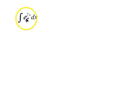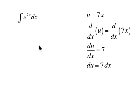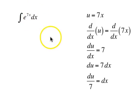We will let u be the exponent, so u is going to equal 7x. Taking the derivative with respect to x of both sides, du/dx is 7. Our strategy is to solve for dx: du is 7 dx, so dividing both sides by 7 gives du divided by 7 equals dx. Therefore, e to the 7x becomes e to the u, and dx becomes du divided by 7.